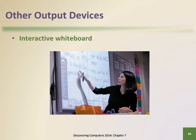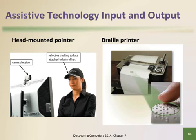Output devices are also available for physically challenged computer users. On-screen keyboards, head-mounted pointers, the Windows Magnifier command, braille printers, and screen reader software are just a few examples of adaptive technology for computer users with special needs.